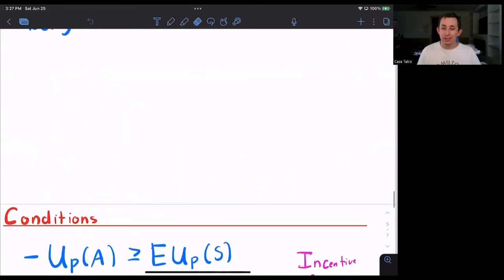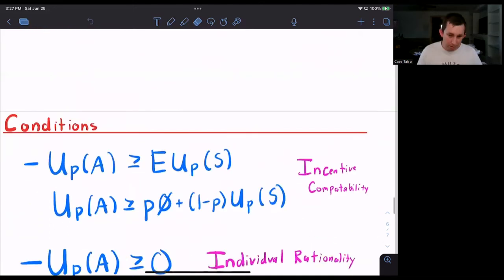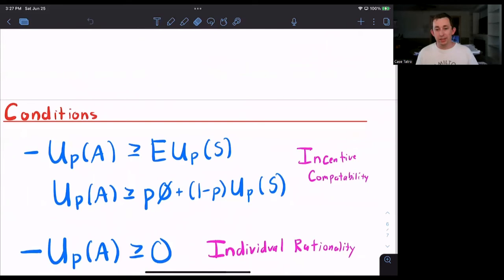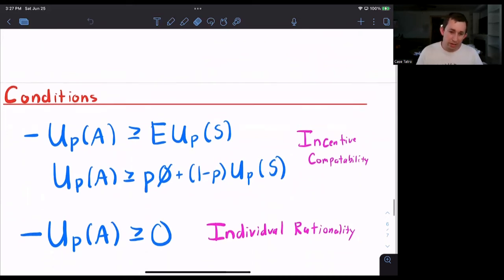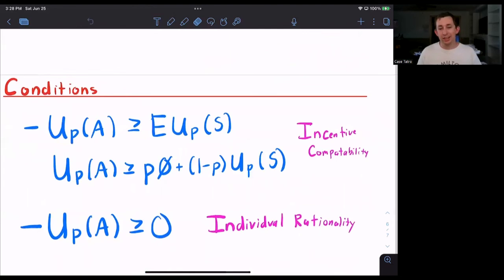Well, we have a couple of constraints, and you'll recognize these from the adverse selection problem. We have the incentive compatibility constraint, which says that the utility to the pilot of accepting needs to be greater than or equal to the expected utility to the pilot of calling out sick, which we can write out: there's a p chance they get nothing and a 1 minus p chance they get the utility of sick.